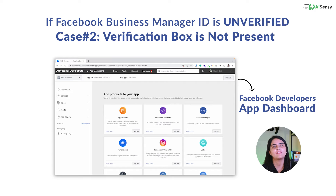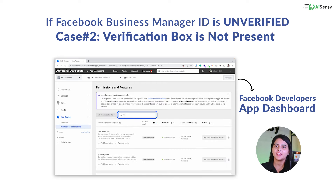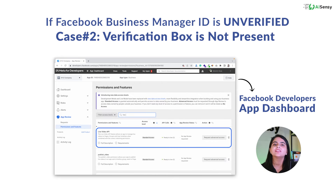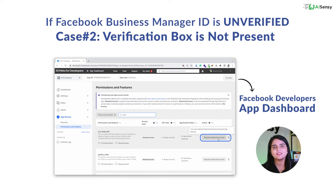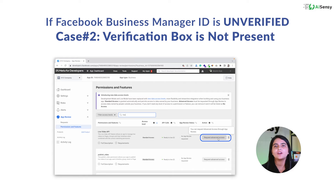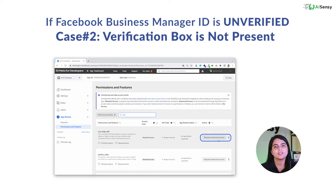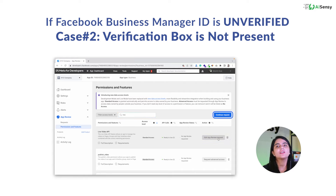Now you will enter the Facebook Developer's App Dashboard. On the left-hand side, click on App Review, then Permissions and Features. Type 'live' in the search bar. You will see the Live Video API in the options. Click on Request Advanced Access on the right-hand side of the Live Video API. After clicking on Request Advanced Access, click on Continue Request. If you are unable to find the Request Advanced Access option, move the cursor to the right side to find it, then click on Continue Request.